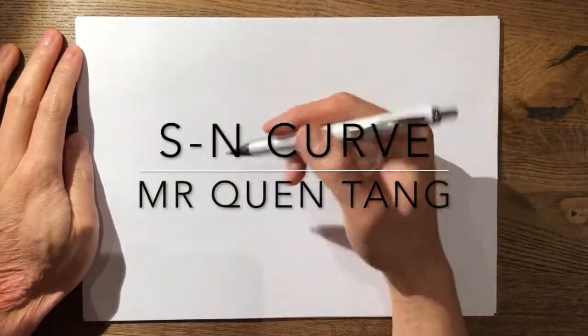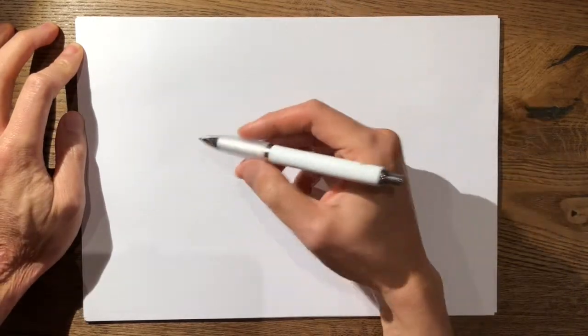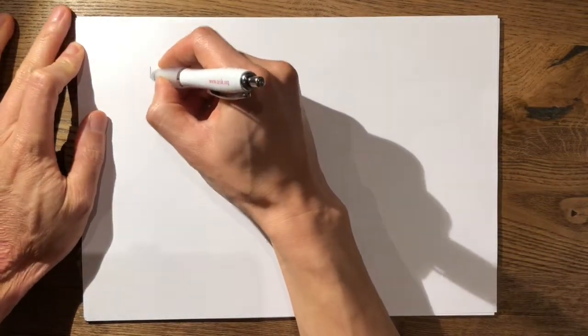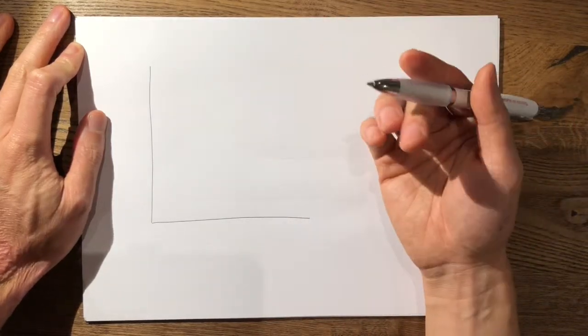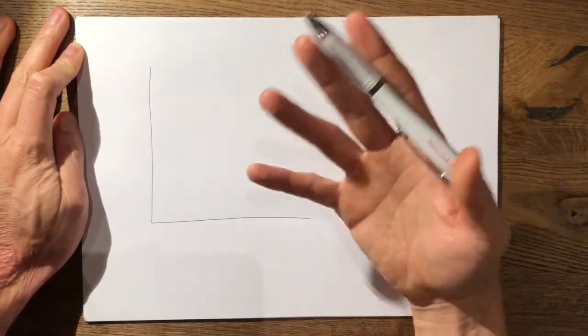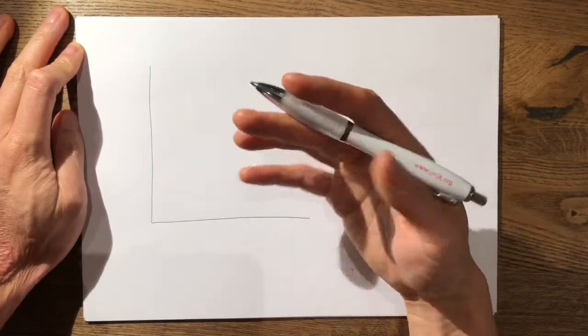In this video I'm going to explain the endurance limit of a material by drawing the SN curve. Now in the exam you may be shown a picture of a tibial poly which has undergone catastrophic failure and you may be asked why has this happened, and this is where you take your opportunity to draw the SN curve.